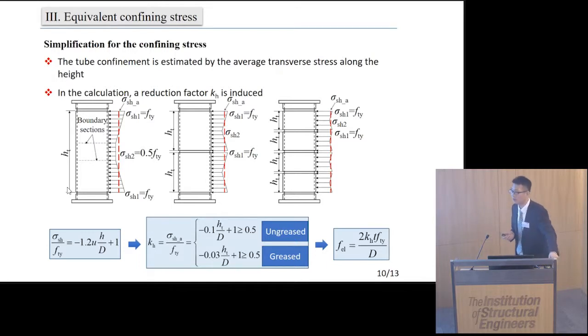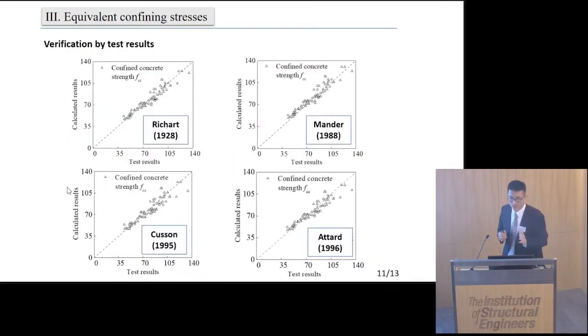In the calculation, a reduction factor for the transverse stress KH is induced to consider the effect of the column height and the friction factor between the steel tube and the concrete.